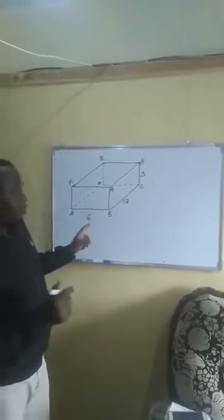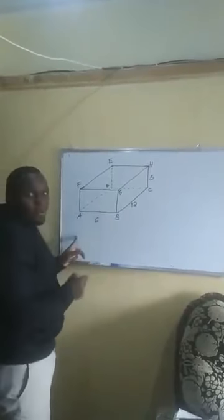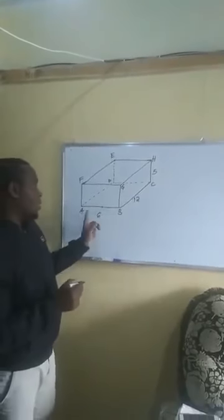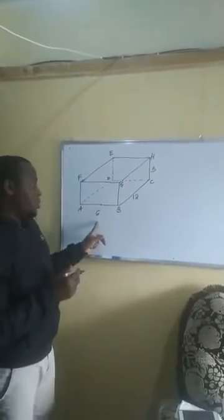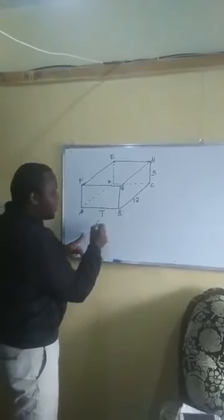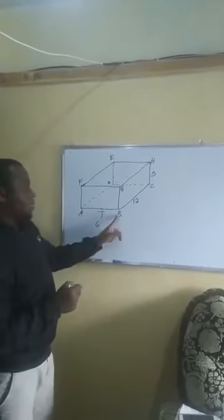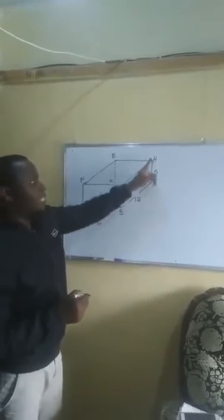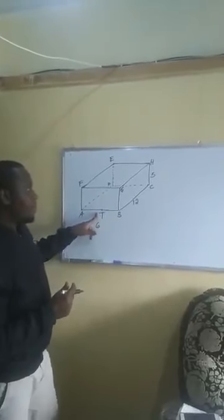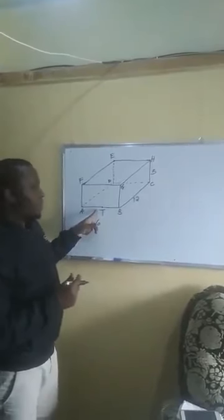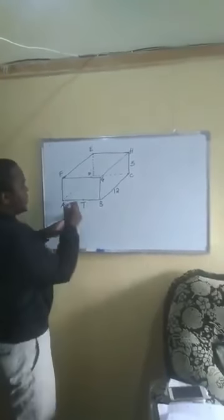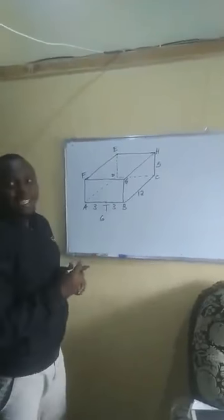I want us to introduce a point on line AB. The point is exactly at the middle of point A and point B — call that point T. The dimensions here are all in centimeters: AB is 6 centimeters, BC is 12 centimeters, and CH is 5 centimeters. Point T is the midpoint of AB, so each half is 3 centimeters.